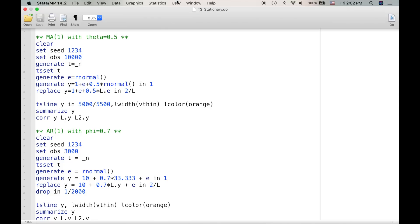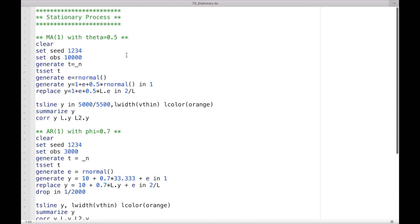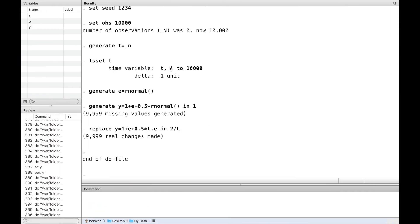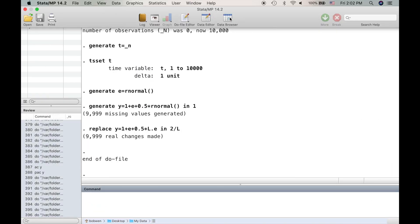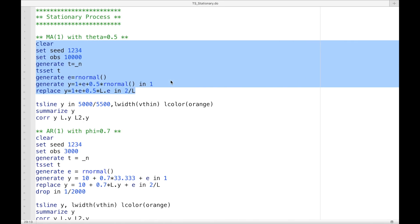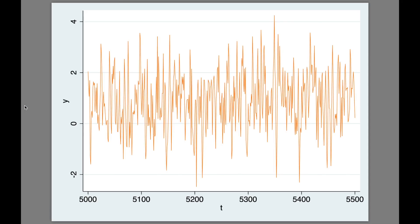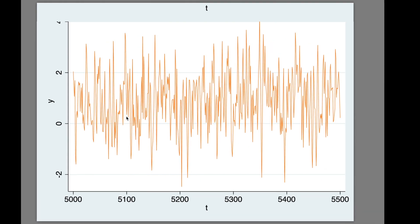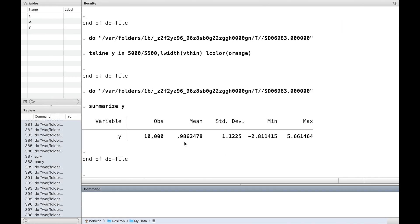The first autocorrelation is a function of theta, and the other higher autocorrelations are zero. We can simulate the first order moving average process using R. Suppose theta is 0.5. We can draw the graph of the time series using ts.plot.